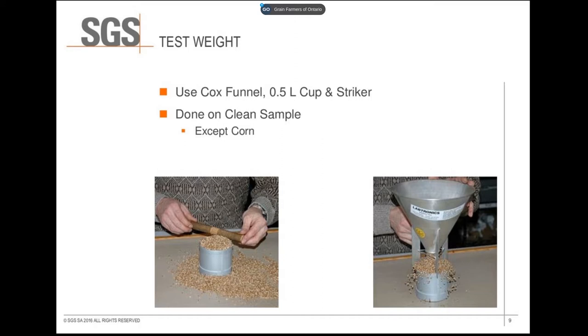Test weight is to be done on clean samples except for corn, unless specified in the delivery contract. Wet corn generally has a lower test weight compared to when it is dried, so conversion is necessary to get the proper test weight.